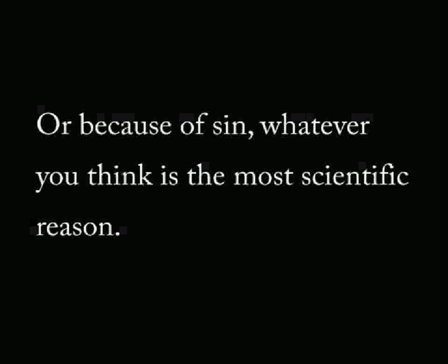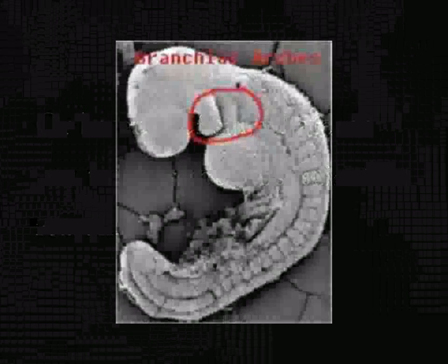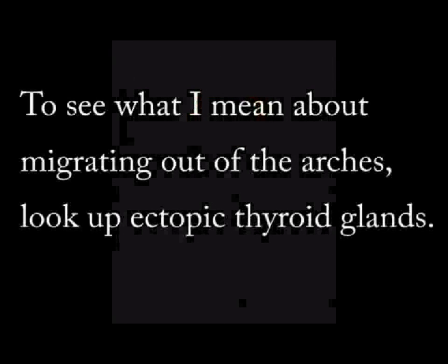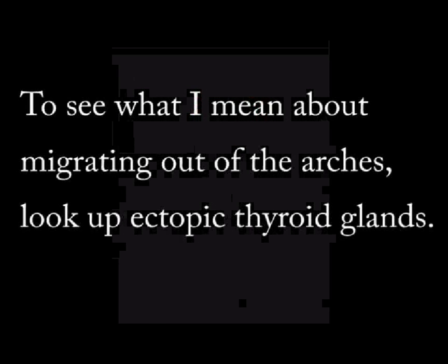This nerve originates from the sixth pharyngeal arch — those are the dreaded gill arches — and it migrates. Structures have to migrate out of the head into certain places of the body, and due to the differential migration of different things in different arches, it's stuck this way. Although it would be ideal to have it simply run from the base of the brain into the larynx, it can't do that. It develops a certain way due to its evolutionary history, and it has to adhere to that.